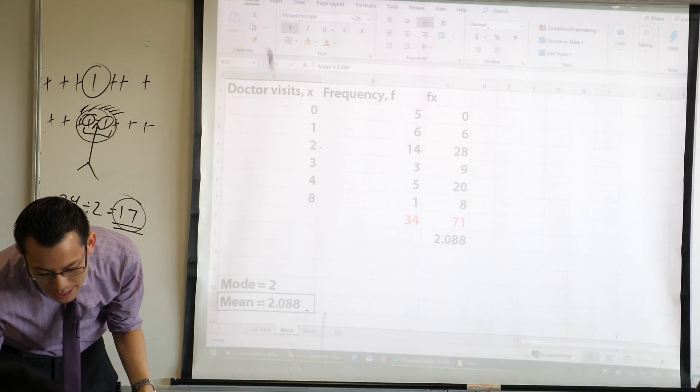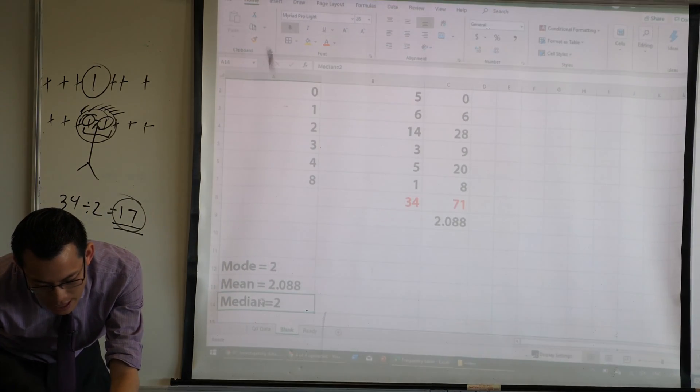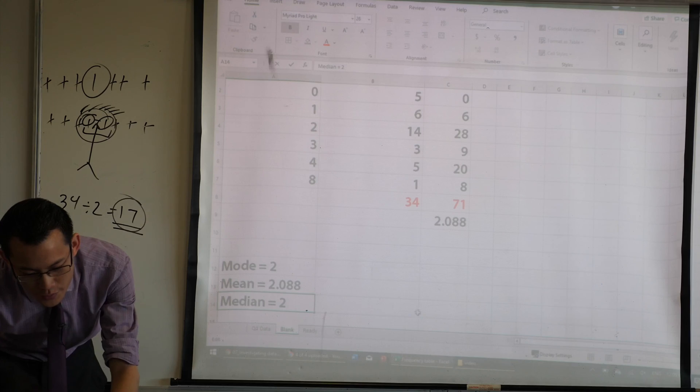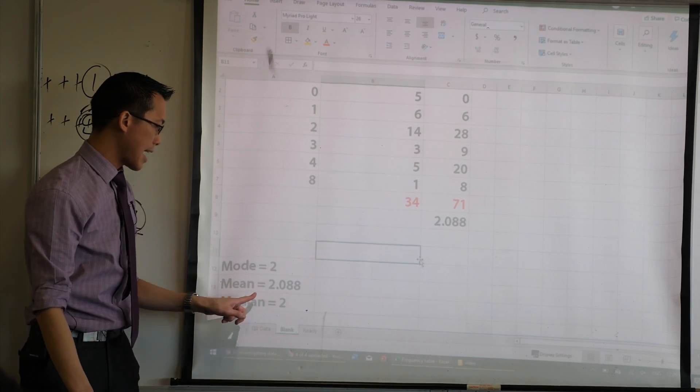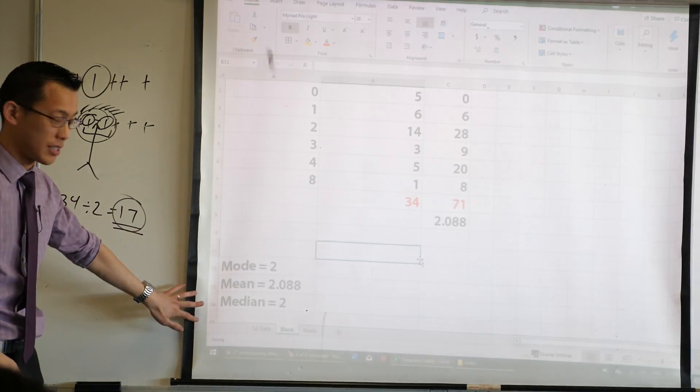So from there, I could say, median equals 2. Now what's nice about this is, you've got the mode, mean, and median all fairly close together. Right? Do you agree with that? They're all fairly close together.